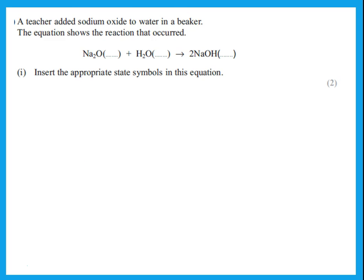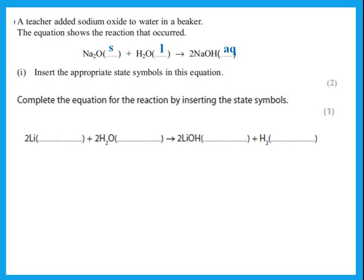Sodium oxide was added as a solid (s) to water, which is a liquid (l). When you dissolve something in water it forms an aqueous solution (aq). For lithium reacting with water: lithium is a metal so it is a solid (s); water is liquid (l); lithium hydroxide dissolves to form an aqueous solution (aq); and hydrogen produced is a gas (g). State symbols should be straightforward.